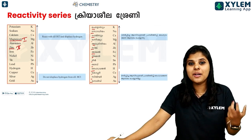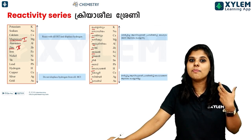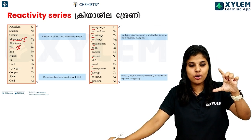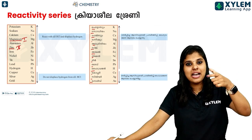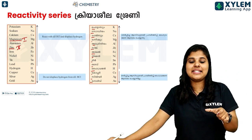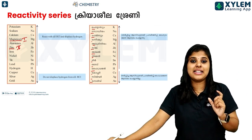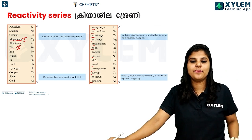The reactivity series order is: Potassium, Sodium, Calcium, Magnesium — then Aluminium, Zinc, and Iron further down the series.